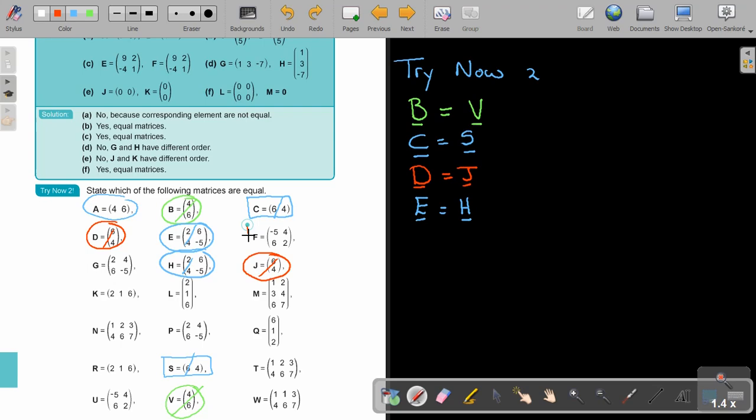Okay. Let's see if we find one for F. Okay. So, can you see? Negative five, six, four and two. Do you see U? Yes. F will be equal to U. Okay. So, this is also now out.